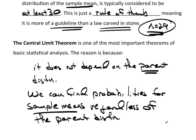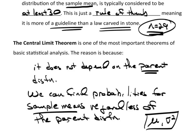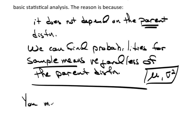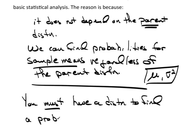What this says is: you don't have to know the parent population or its distribution. You do need to know some parameters — you need to know mu and sigma-squared, you have to know these parameter values. But regardless of the parent distribution, if the sample size is big enough, the central limit theorem gives us a way to find probabilities. A very key point is that you must have a distribution to find a probability — no distribution, no probability. That's extremely important because we make decisions based on probabilities.